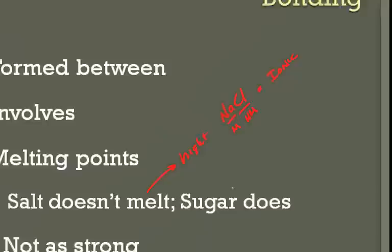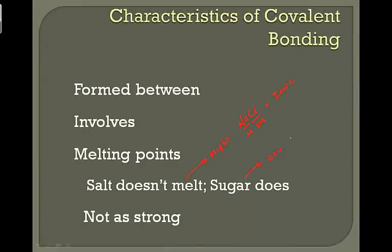While sugar, a covalent compound, has a lower melting point. This leads us to understand that covalent bonds are not as strong as ionic bonds.